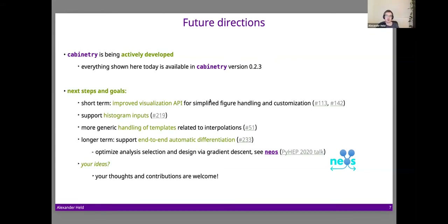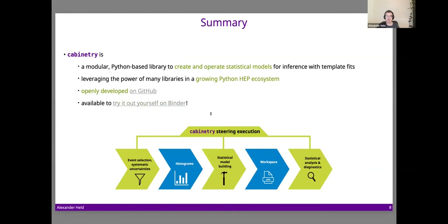For next steps in the short term, an overhaul of the visualization API is planned to make figure handling more convenient. Histogram inputs instead of columnar data are another topic that comes up frequently. A more technical topic is supporting models beyond HistFactory. In the longer term, an important goal is end-to-end automatic differentiation — see the neos project and related PyHEP 2020 talk. In summary, cabinetry is a Python-based library for creating and operating sophisticated models, using the Python high-energy physics ecosystem, available on GitHub and runnable on Binder.